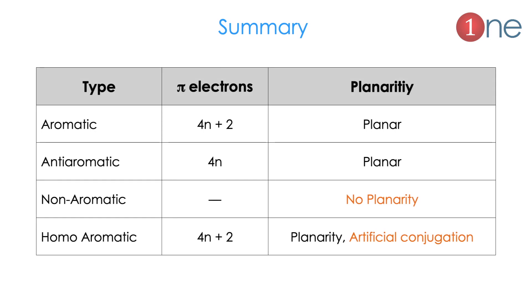Let us summarize what we have seen. Aromaticity has four types: aromatic, anti-aromatic, non-aromatic, and homo-aromatic. Aromatic means 4n+2 pi electrons. Anti-aromatic means 4n pi electrons. Non-aromatic means mostly no planarity or no cyclic structure. And homo-aromatic means artificial conjugation — one carbon goes out of the plane to create the aromaticity.